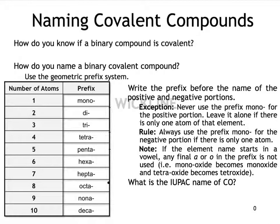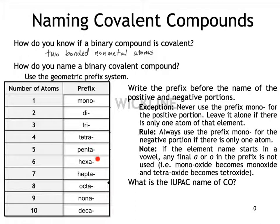A binary compound is covalent if you've got two different non-metal atoms bonded together. Naming them really couldn't be easier — we're going to use the geometric prefix system, some of which you probably know: 1 is mono, 2 is di, 3 is tri. After 5, it follows what you'd expect from math class: 4 is tetra, 5 is penta, then hexa, hepta, octa, nona, deca. You use these prefixes only for non-metal/non-metal covalent compounds, and they tell you how many atoms of that element are in the molecule.